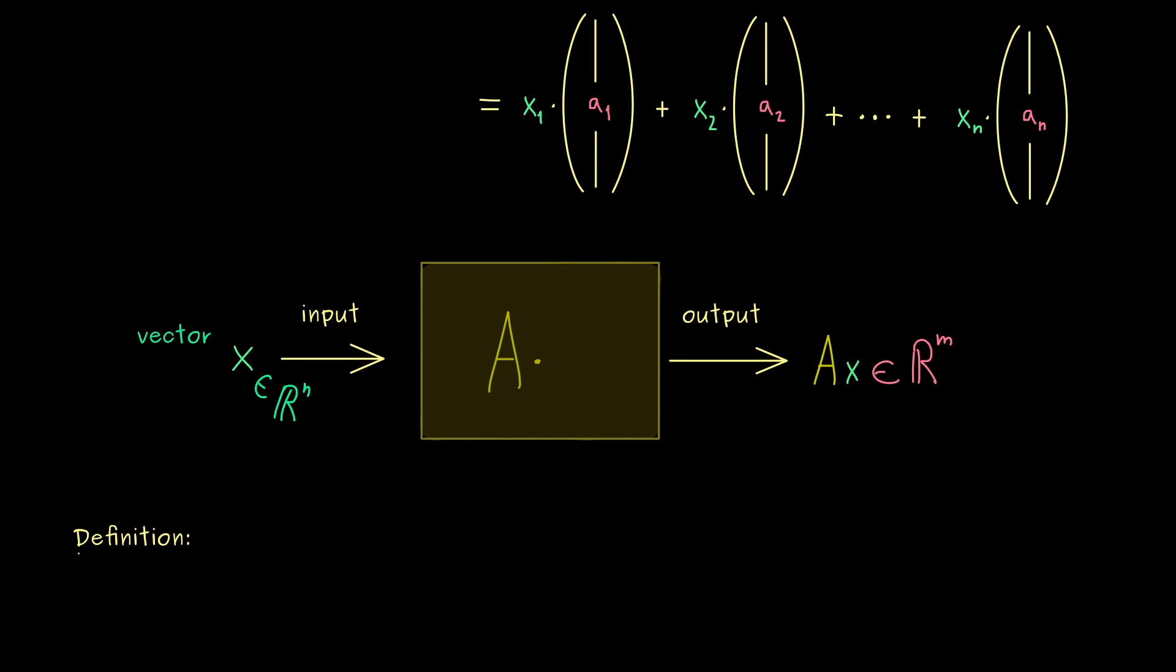Therefore, as always, we can simply put this into a definition. And I want to call the map F with index A. Now, more precisely, this is a map from Rn into Rm. And the definition says, it maps x to the vector Ax. In other words, the map FA is defined with the matrix vector product. In fact, later we will show, that this is indeed a linear map.